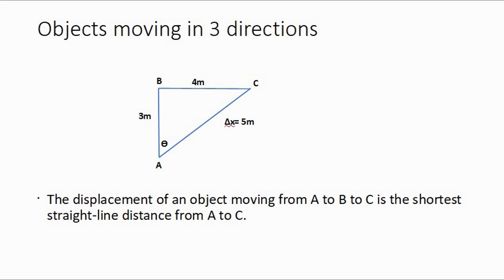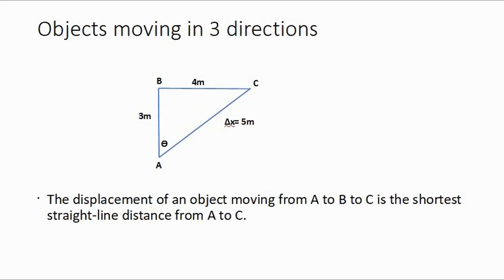We worked on our delta x. Let's try to work it out — how do we get delta x to C? Because it appears to be a right angle triangle and we already have two sides, we can use our old friend Pythagoras.